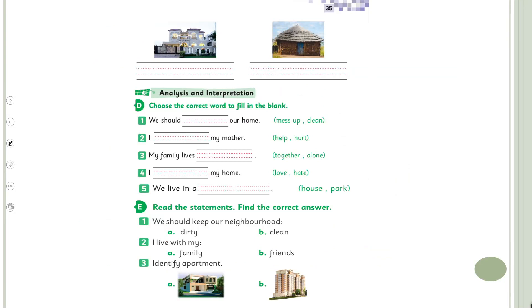That is why we need to keep everything clean. Now open page number 35. We will do Analysis and Interpretation — Exercise D: choose the correct word to fill in the blank. The words are given in front of each blank. Let me do the first one: 'We should ___ our home' — mess up or clean? We must clean our home. Now do the rest yourself: 'I ___ my mother' — help or hurt; 'My family lives ___ ' — together or alone; 'I ___ my home' — love or hate; 'We live in a house or park.'